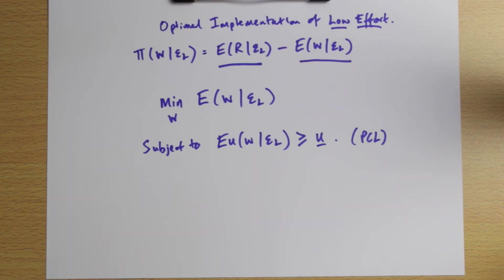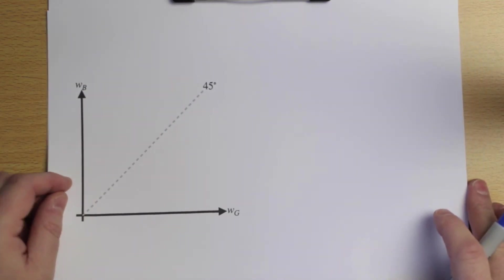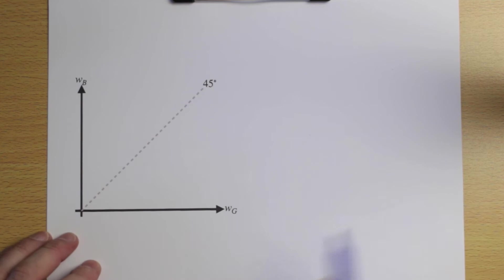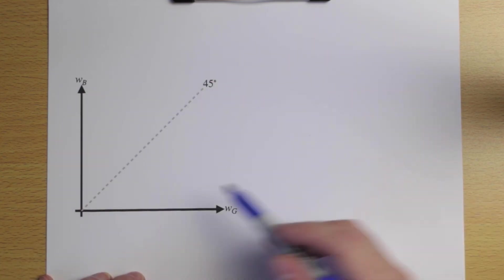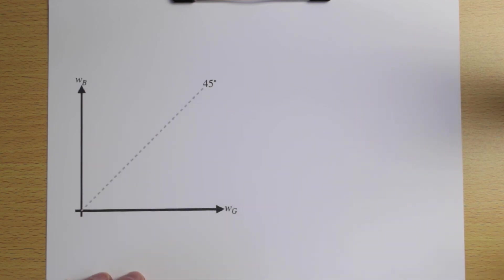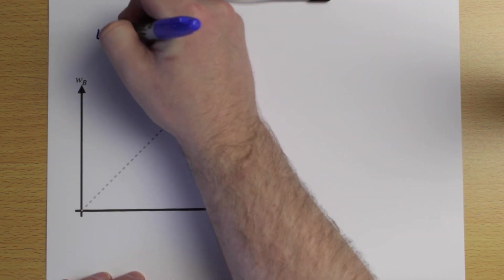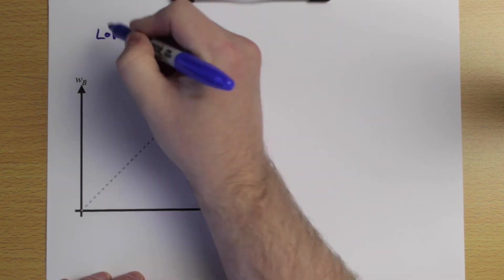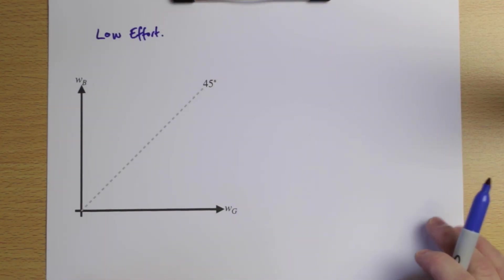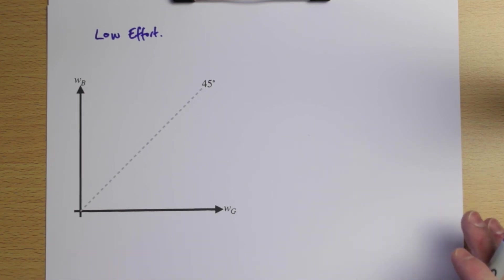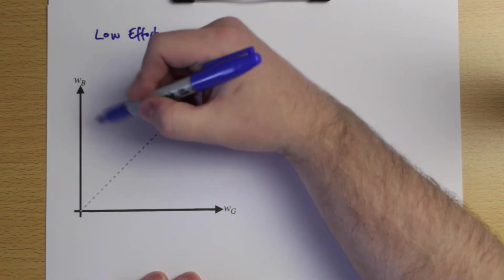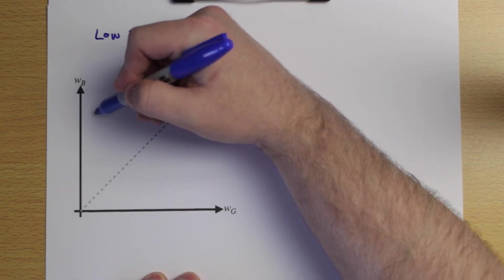We're minimizing a linear function subject to a convex constraint, so we could write down the Lagrangian and go through first-order conditions — but we'll do this graphically to build intuition. The diagram has good-state wage on the horizontal axis and bad-state wage on the vertical axis, with a 45-degree line representing risk-free contracts where wage is the same in both states. Assuming low effort, we draw in the participation constraint PCL — downward sloping and convex, and flatter than the constraint under high effort.